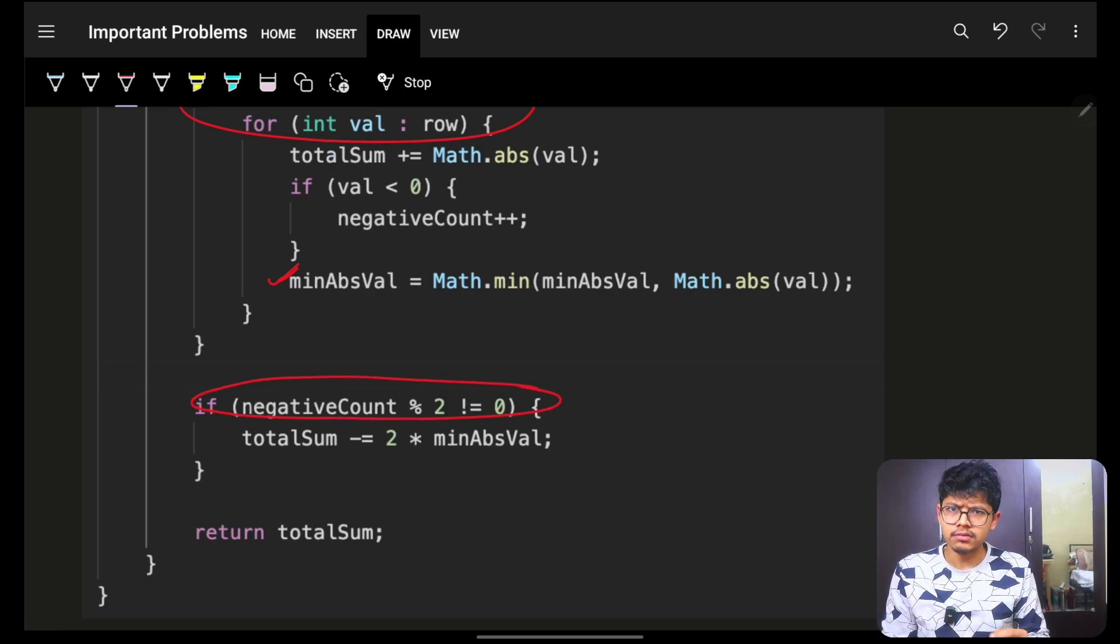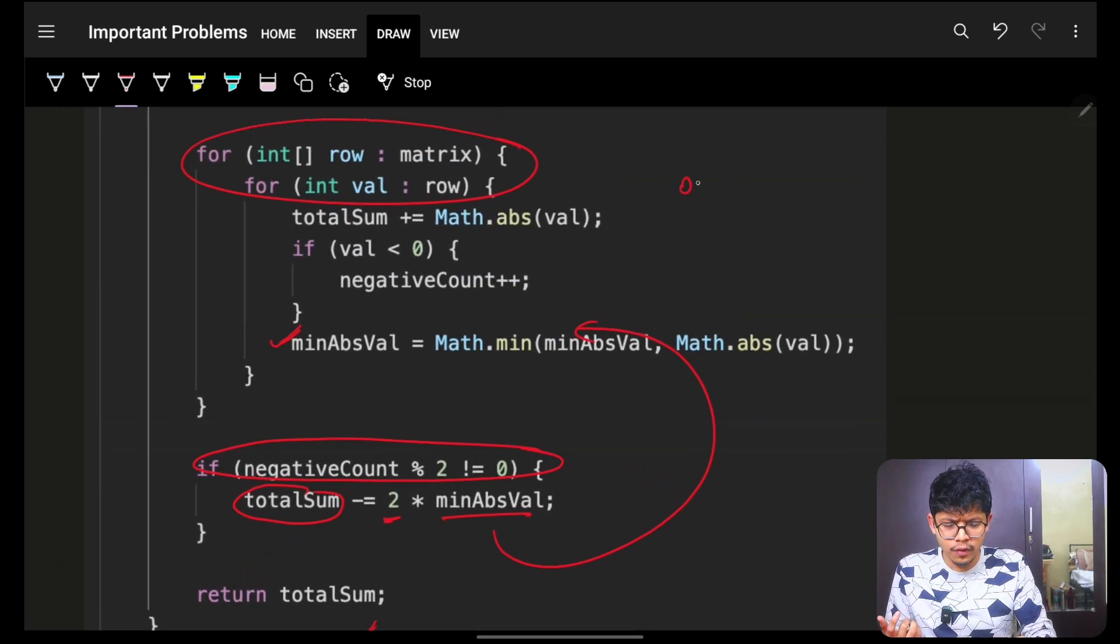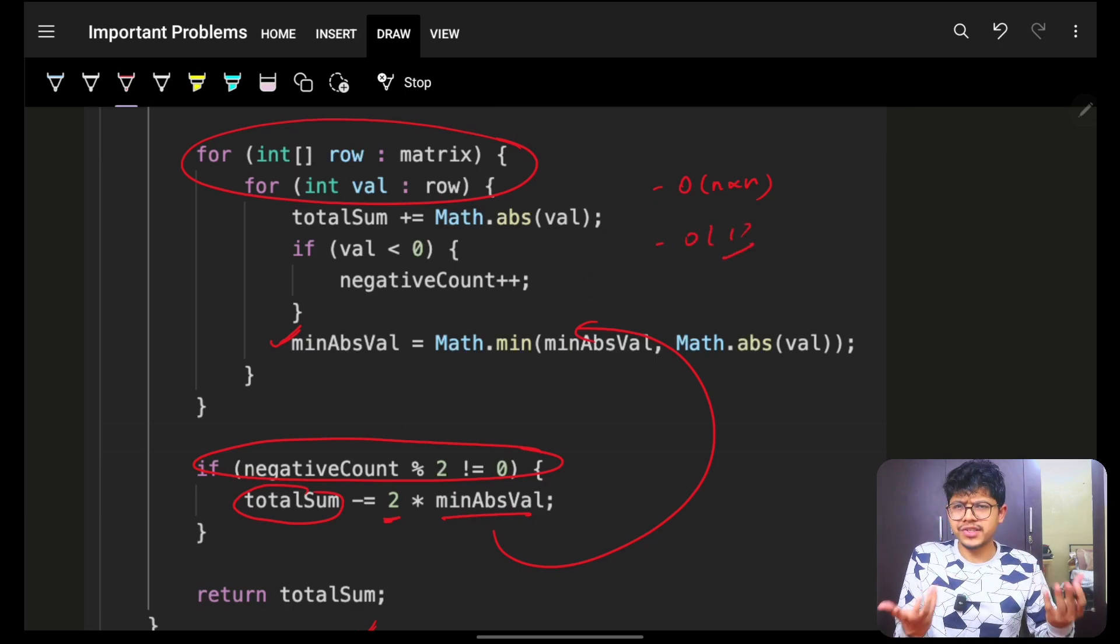you will simply mention that, okay, if the count is odd, then simply from a total sum, do a subtraction of two into minimum absolute value which you found above. And that's your answer. Ultimately, time is simply O of N into N because I have N into N matrix and space will be nothing but O of 1 because you are using no extra space at all.